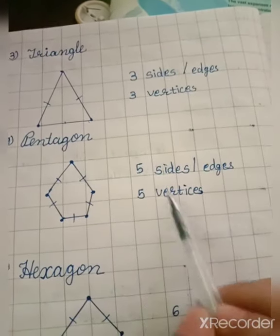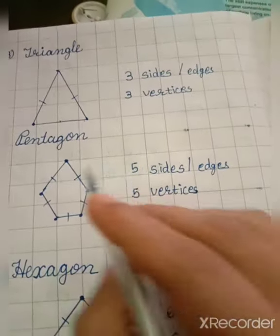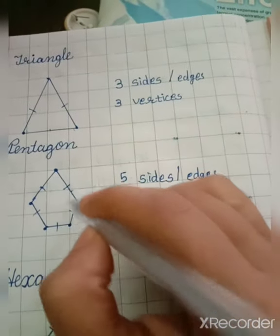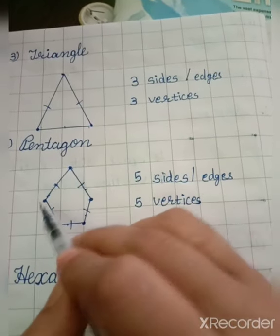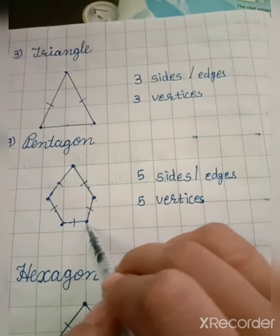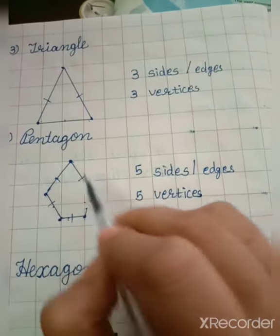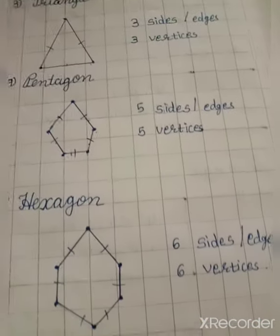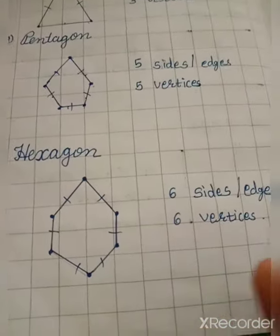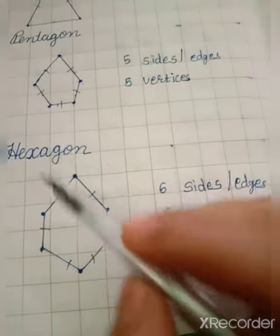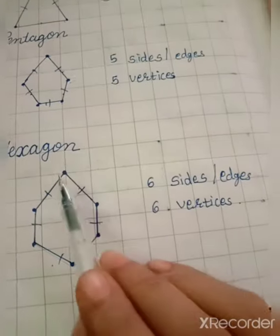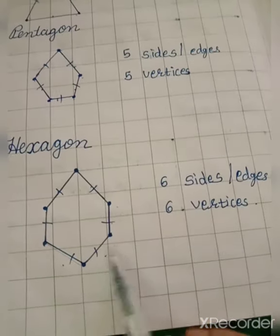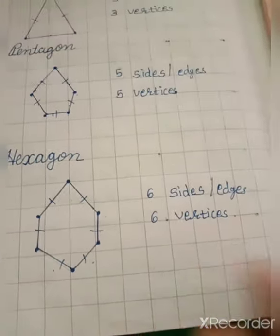Then pentagon — pentagon has five sides and five vertices. Count the sides: one, two, three, four, and five; and vertices: one, two, three, four, and five. Now hexagon — hexagon has six sides and six vertices: one, two, three, four, five, six — and six vertices.